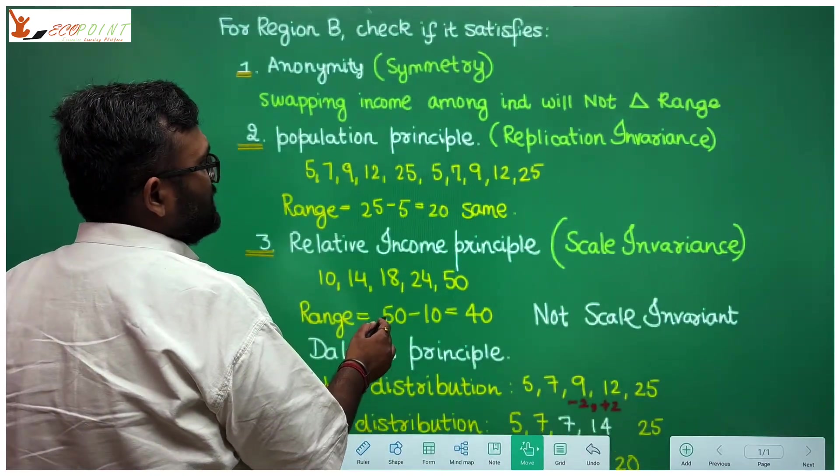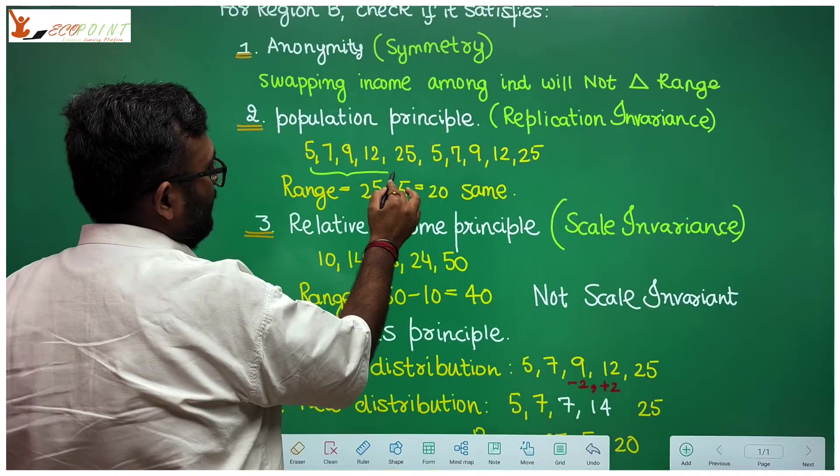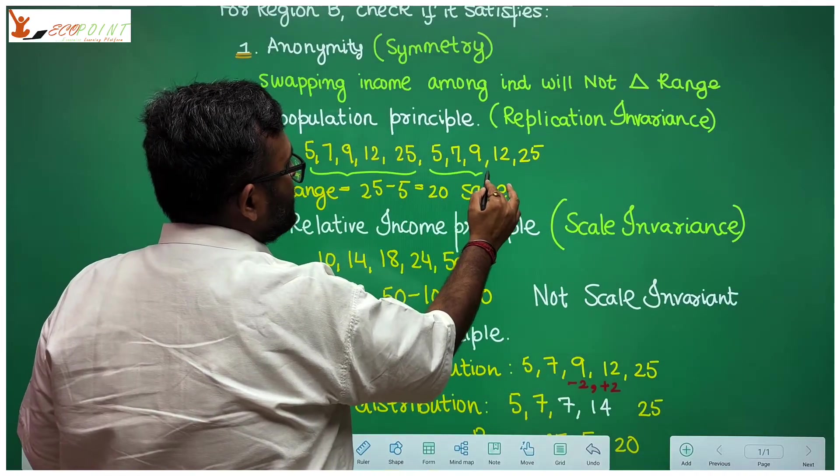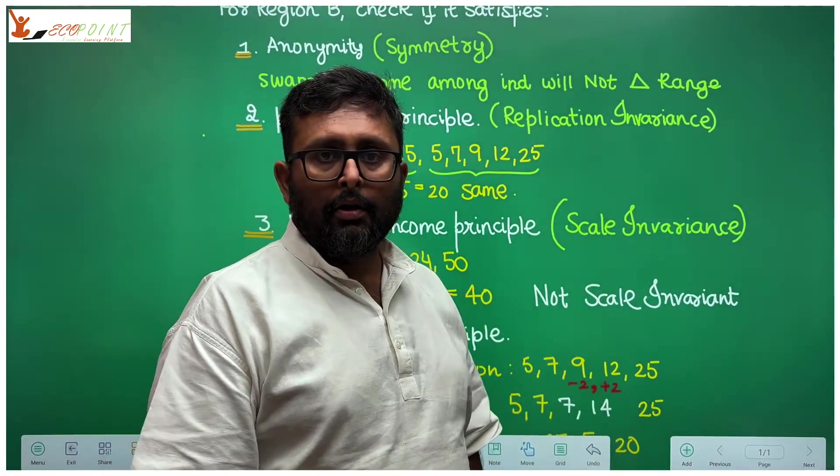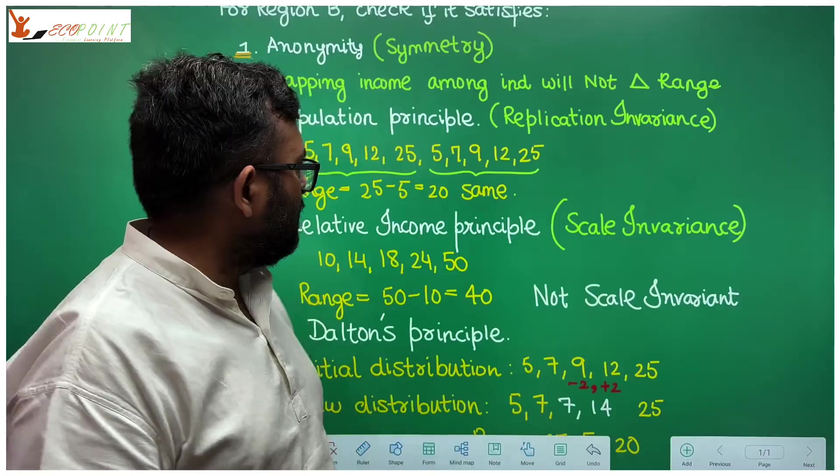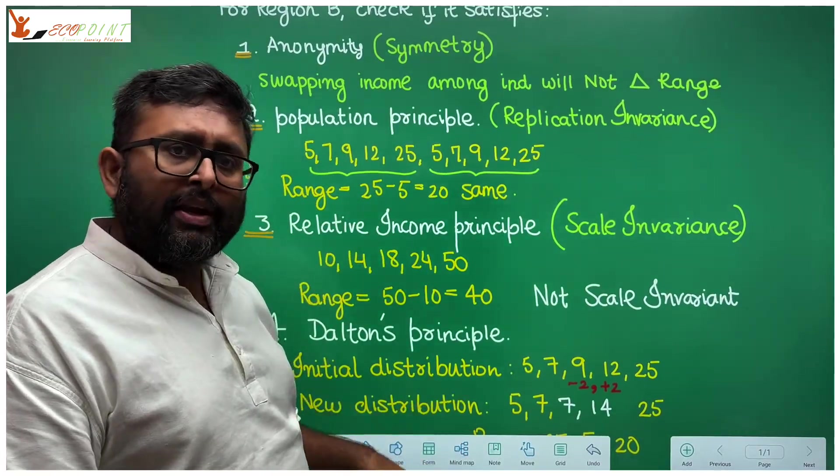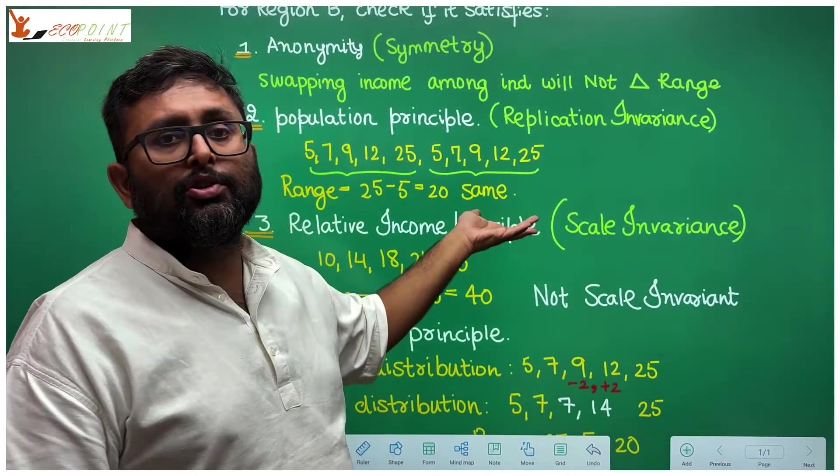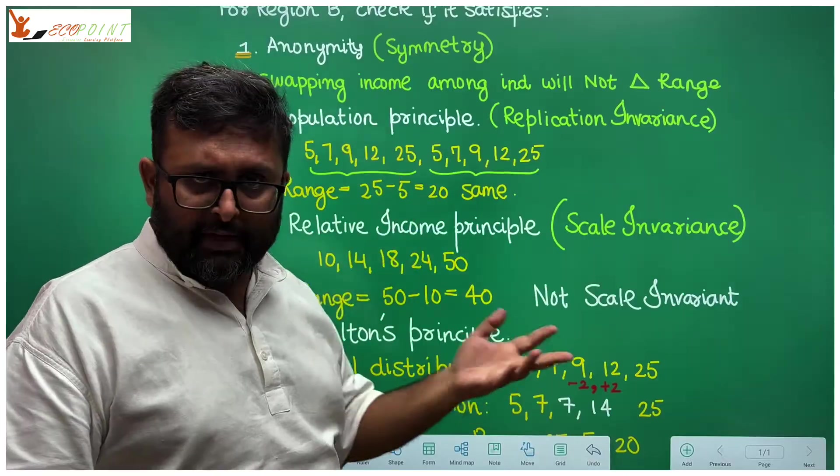Then population principle. Now population principle is what? You have this income distribution: 5, 7, 9, 12, 25. You have replicated this distribution: 5, 7, 9, 12, 25, 5, 7, 9, 12, 25. Does it change range? What is the maximum income level? 25. What is the minimum income level? 5. So range earlier was 20, range now is also same, 20. So does it satisfy your population principle? Yes, it does.